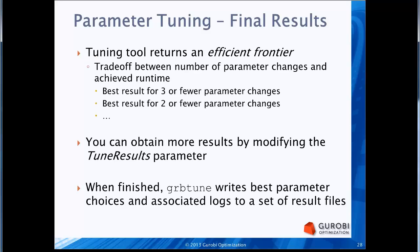The results displayed represent the efficient frontier considering the tradeoff between number of parameters changed and runtime achieved. For example, if your best runtime changed three parameters, we display that result, plus the best runtime achieved by changing two or fewer parameters, and the best achieved by changing one or fewer. This lets you explore the tradeoff. If you want more results, there's a tune results parameter — for example, setting tune results to 10 presents 10 different parameter sets, always including the efficient frontier and adding more to reach the desired count.